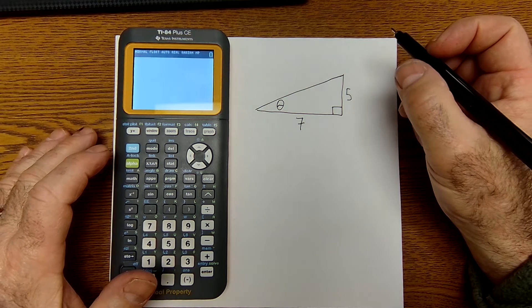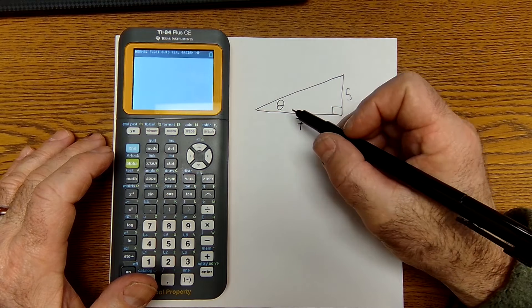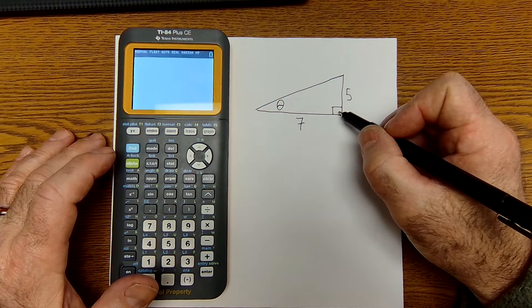I want to do a short video on trigonometry with a calculator, how to find a missing angle. This is right triangle trig, so it has to be a right triangle.